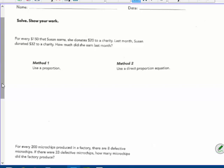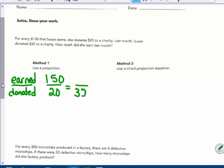So I'm going to set up a proportion like it says here. Method one and I'm going to do earned over donated. So for every one hundred and fifty dollars she was donating twenty dollars to a charity. Well what happens if she donates thirty two dollars to a charity? How much did she earn?